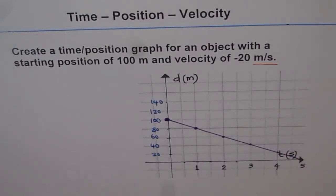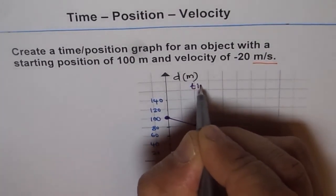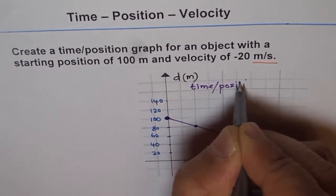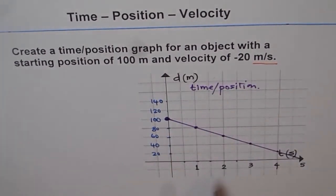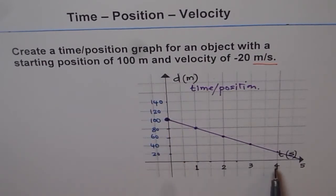So that is our time position graph for an object. We can write this as distance time or time position graph. Where D intercept for us is 100 and the T intercept is at five. After five seconds, the distance will be zero.